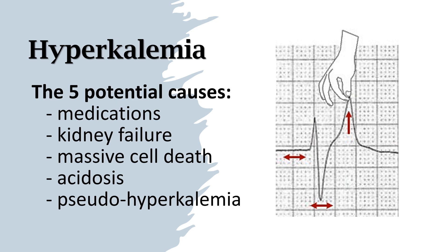Additional ECG changes include slow junctional or ventricular escape rhythms, slow atrial fibrillation, QRS widening, sine wave pattern, ventricular fibrillation, or asystole.